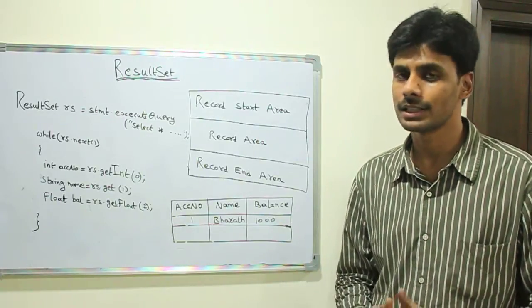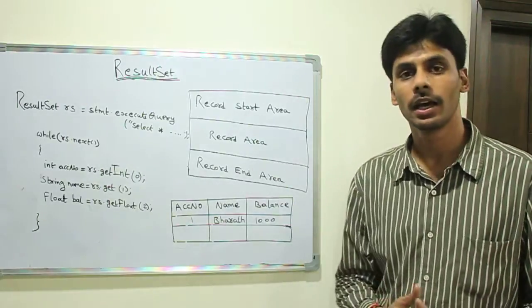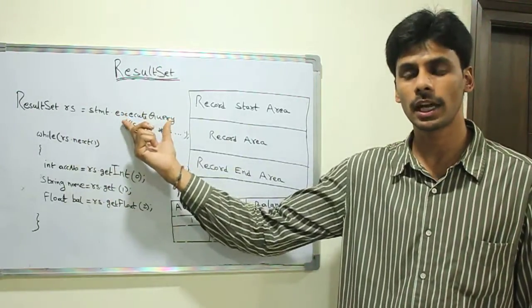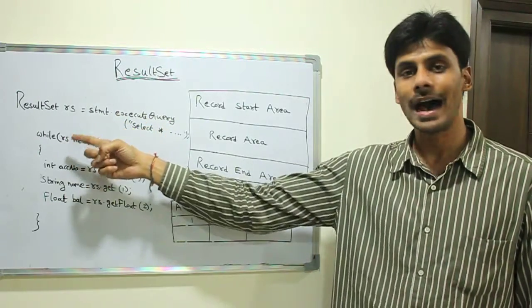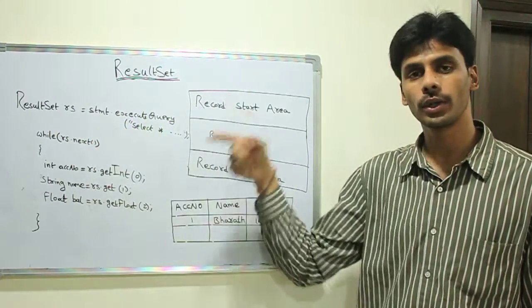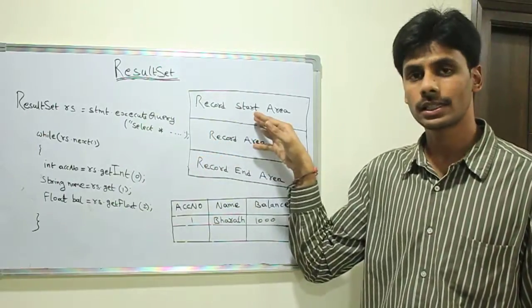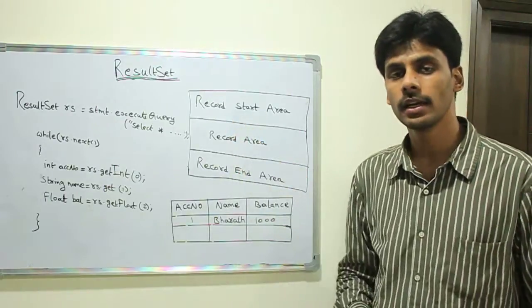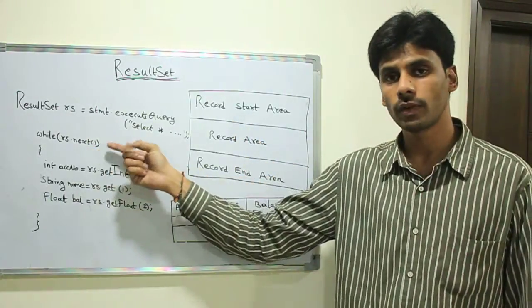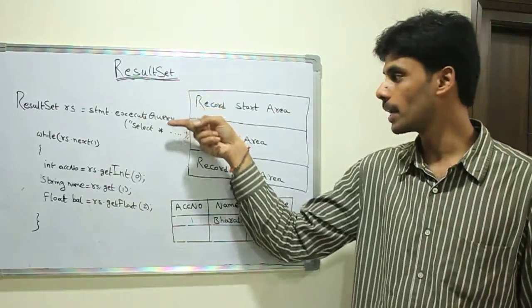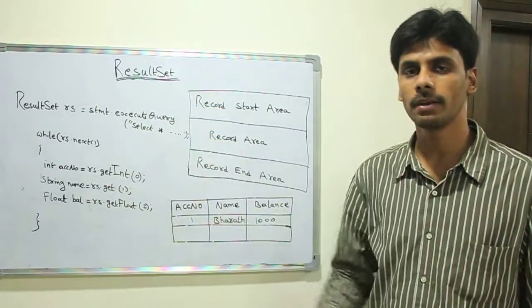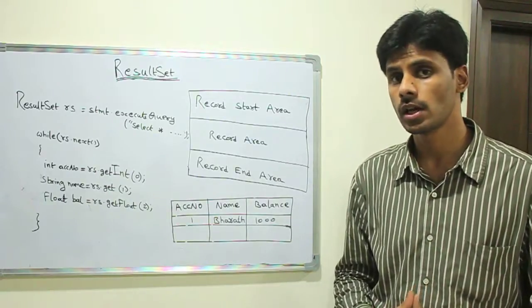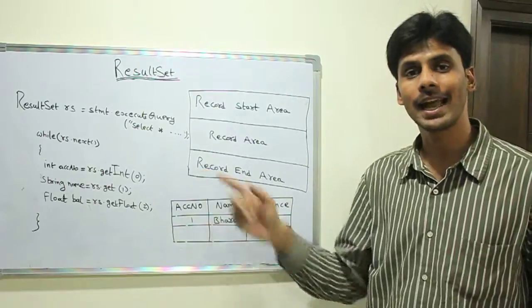To summarize, we get a ResultSet by executing a query. Once we have the ResultSet, we use rs.next to move to the next records. The ResultSet has a start area, then all the records, and then the record end area. When you call the next method for the first time, the pointer moves to the first record, and so on as you call it multiple times. The next method returns false if there are no records or it reaches the end of the record area.